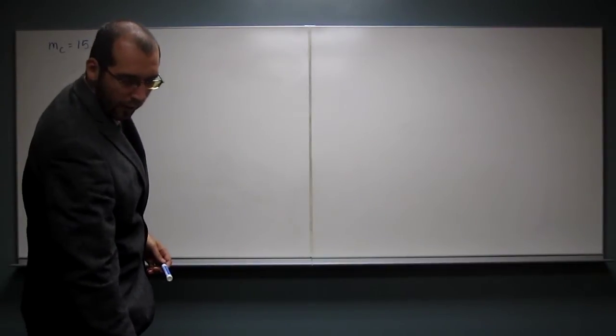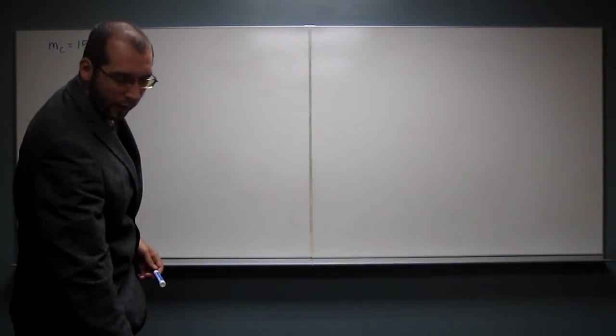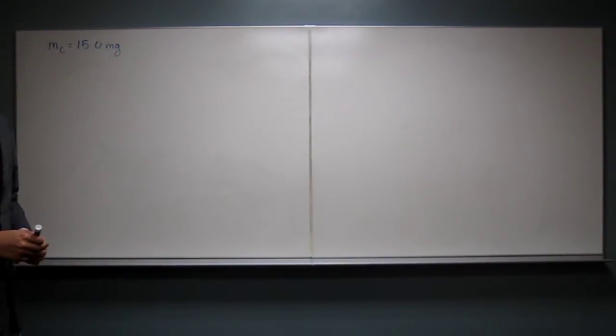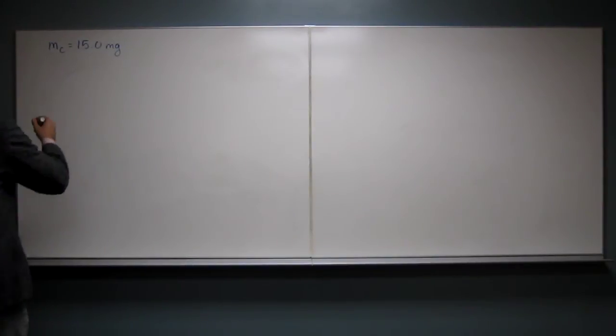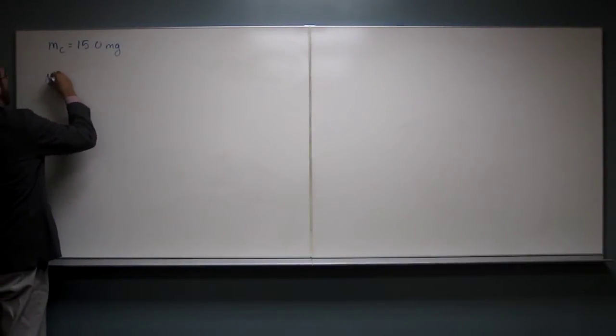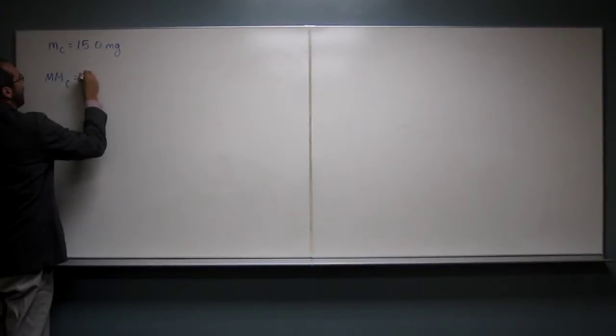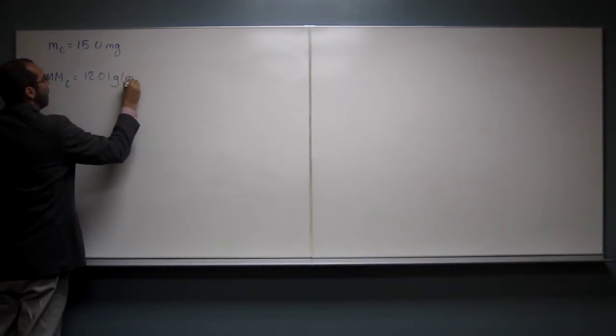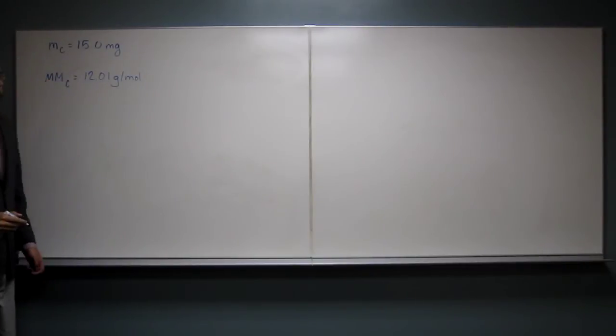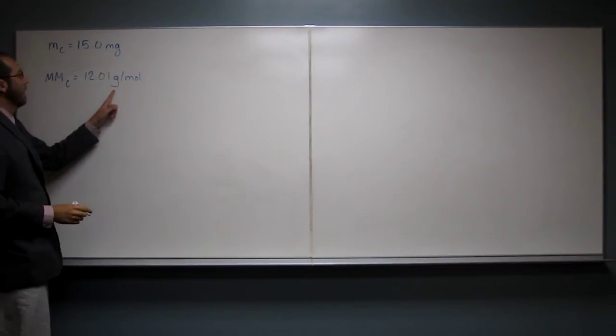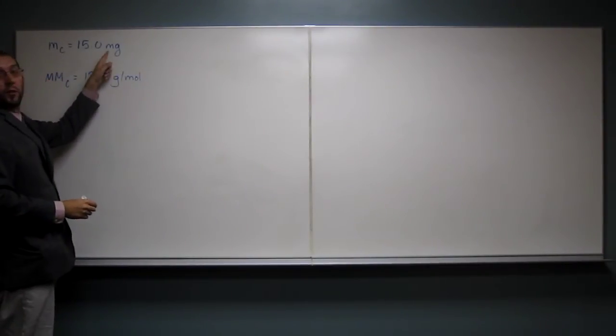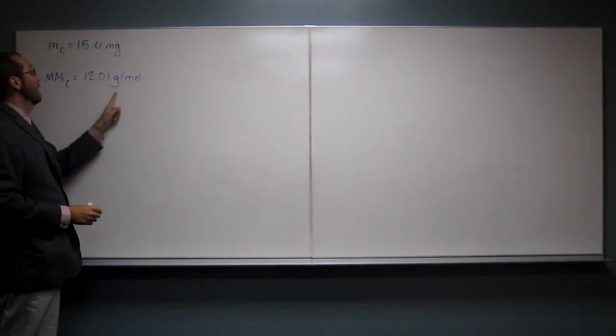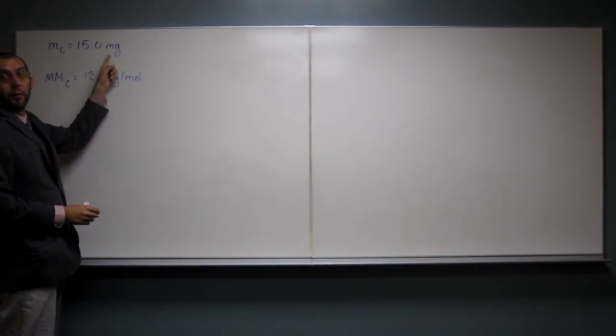And then we look at the periodic table here and it says that carbon's molar mass, we'll put the molar mass of carbon is 12.01 grams per mole. So this kind of helps us to figure out what units we want that in. Since this is grams, we want to put that in grams.